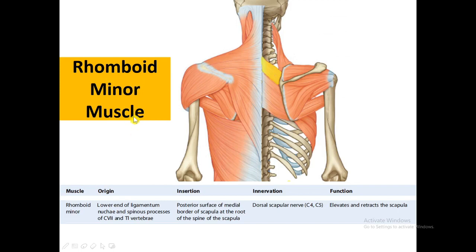The fourth muscle is the rhomboid minor, which has a rhomboid shape and is smaller compared to the rhomboid major, which lies inferior to it. The rhomboid minor originates from the lower end of the ligamentum nuchae and the spinous processes of C7 to T1. It inserts on the posterior surface of the medial border of the scapula at the root of the spine of the scapula. It is innervated by the dorsal scapular nerve and functions to elevate and retract the scapula.